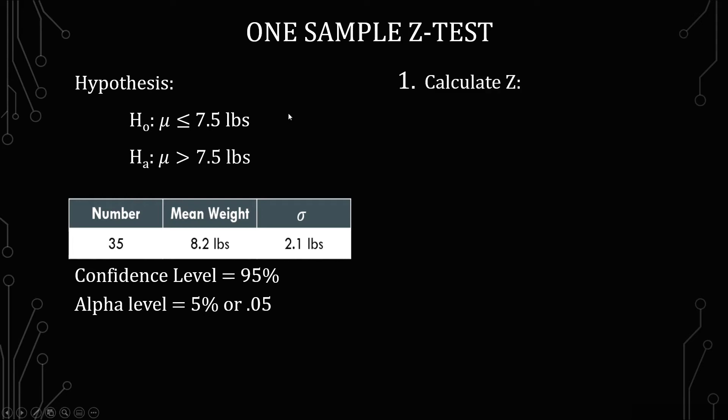The first thing we have to do is calculate z. The formula for z is x-bar minus mu naught divided by the standard deviation divided by the square root of n. That's a lot all in one little bit there, but that's okay. It simplifies. We've got everything we need, it's just a matter of filling in the values.